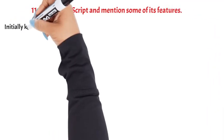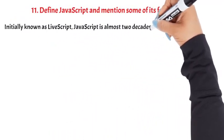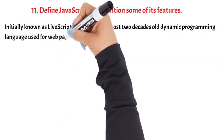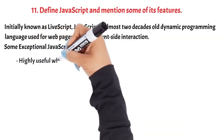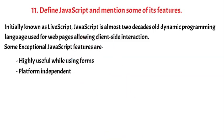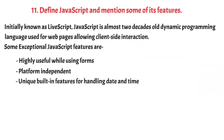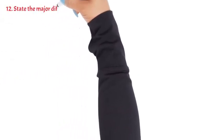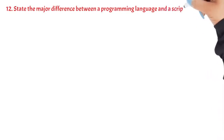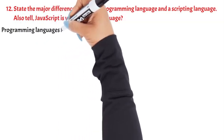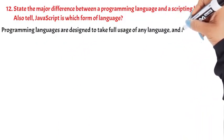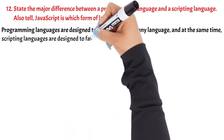Question 11: Define JavaScript and mention some of its features. Initially known as LiveScript, JavaScript is an almost two-decades-old dynamic programming language used for web pages, allowing client-side interaction. Some exceptional JavaScript features are: highly useful while using forms, platform-independent, unique built-in features for handling date and time, and includes a rich interface like drag-and-drop.